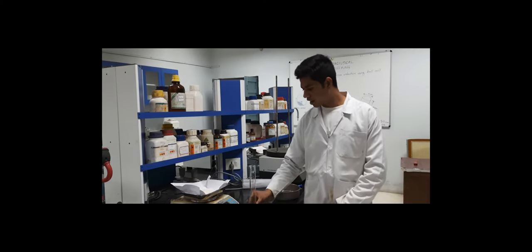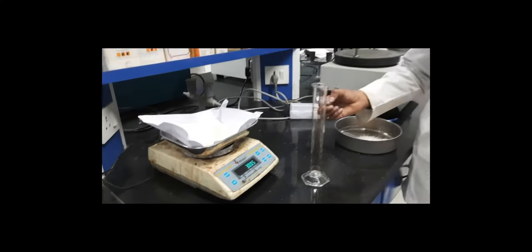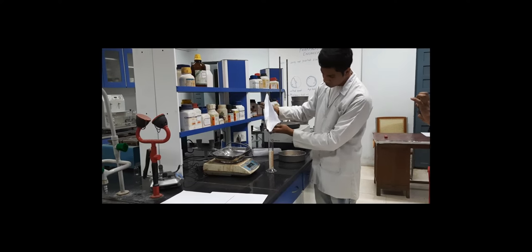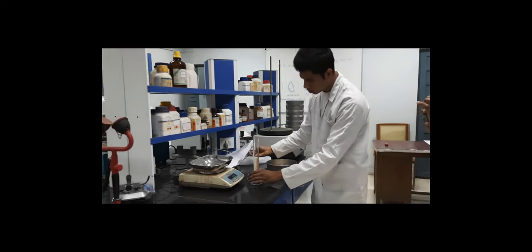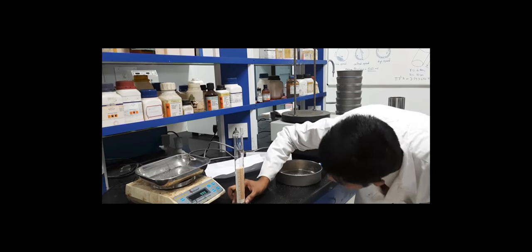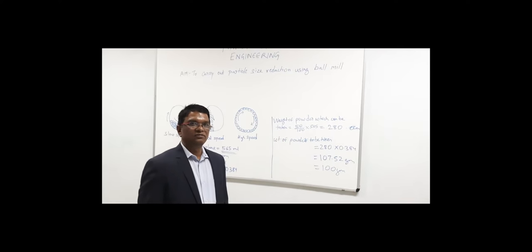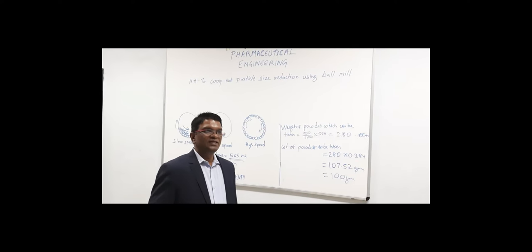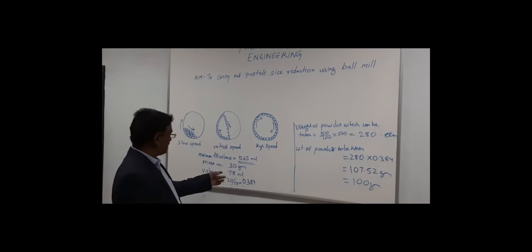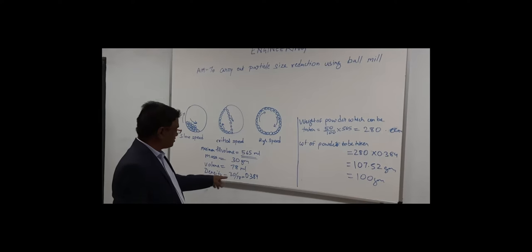Now we are going to determine the density of the powder to be filled in the mill. For that, we have taken 30 grams of powder and transferred it into a measuring cylinder to get the volume of the powder. From that volume we calculate the density using the formula: density = mass divided by volume. After transferring the 30 grams of powder, its volume is approximately 78 ml. The density of the powder calculated is 0.384.